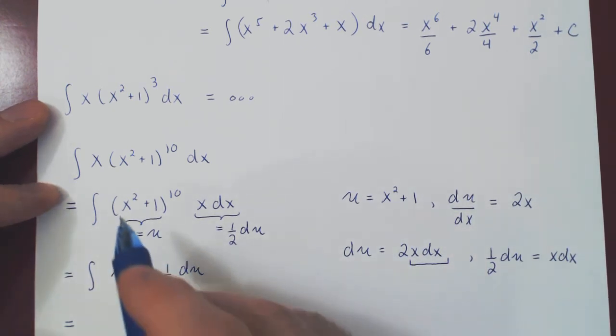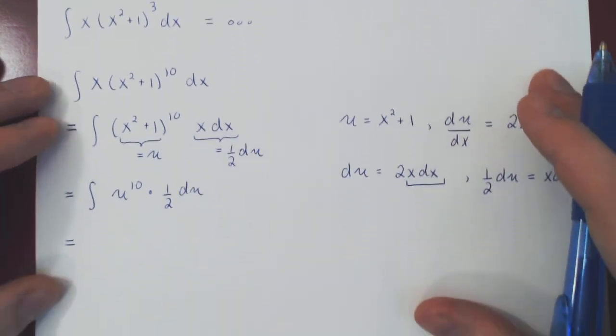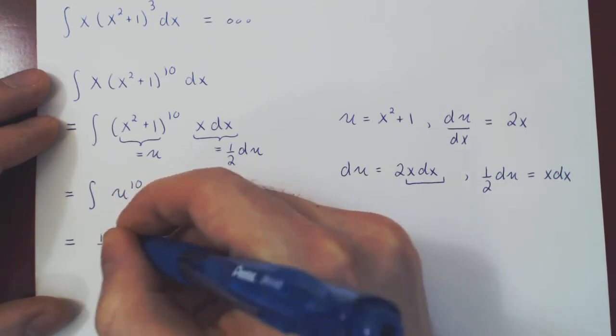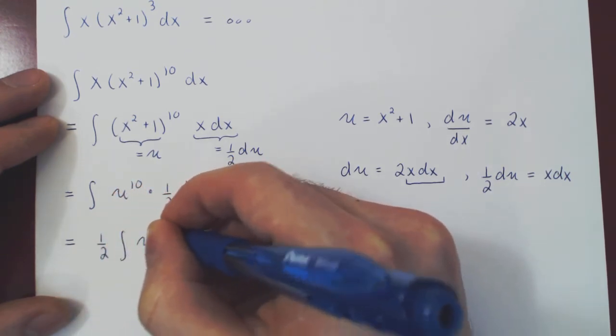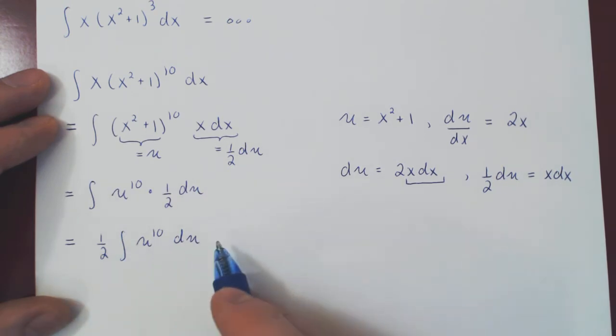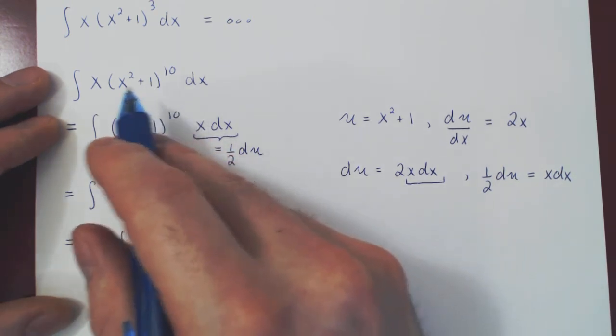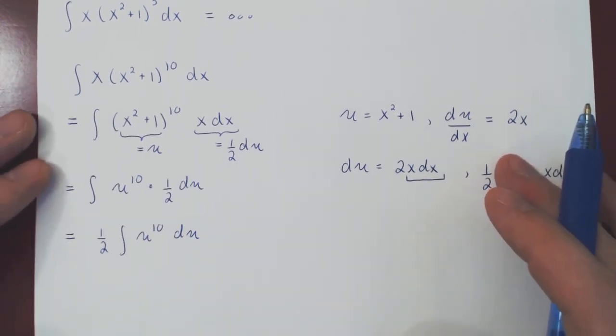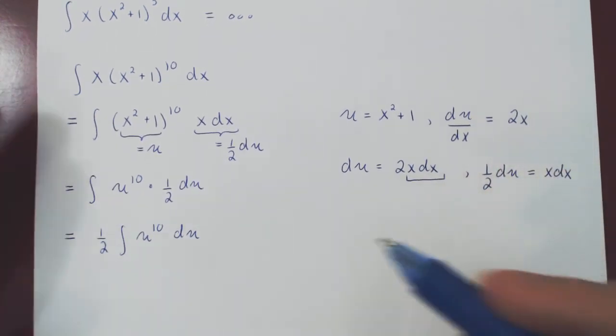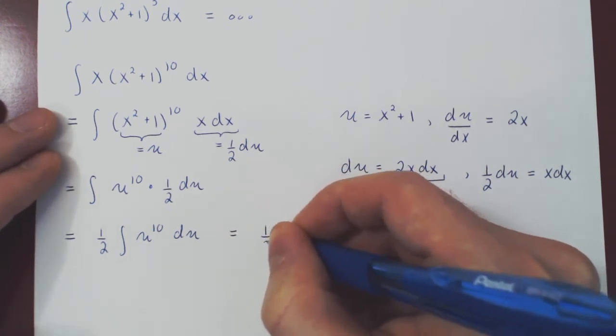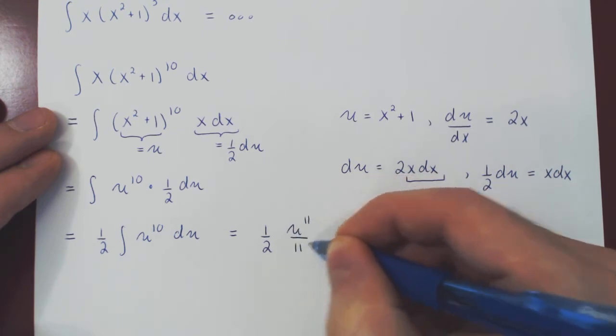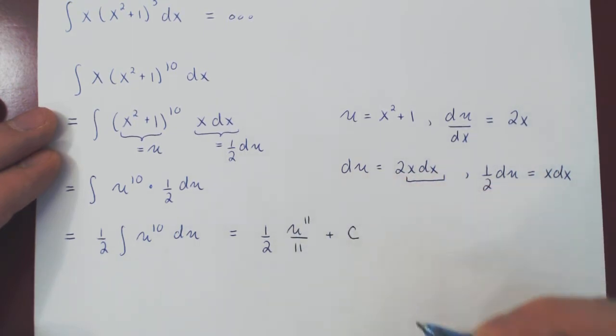So we replace 1 half du. And now we're good to go. Everything in terms of x has been replaced in terms of u. 1 half is a constant multiple, we can factor it outside of the integral. So 1 half the integral of u to the 10 du. And if you look at this integral now, the problem has disappeared. There's no longer a multiplication by x. It's just u to the 10, a simple polynomial in terms of u. So we can use the power rule. 1 half stays there, power rule on u, u to the 11 over 11, plus the arbitrary constant of integration.